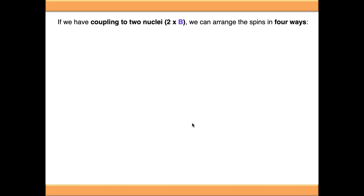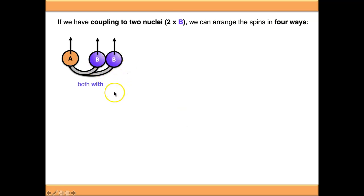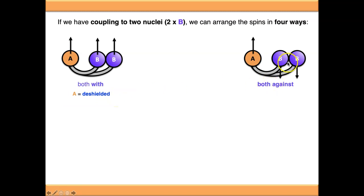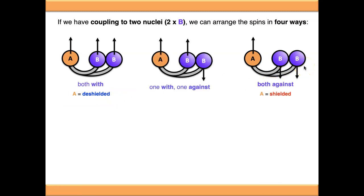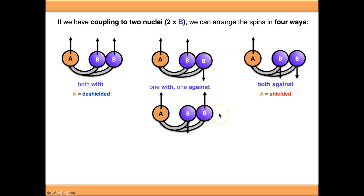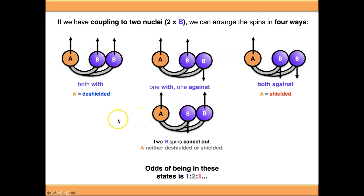For a more complex example coupling to two equivalent nuclei, we can arrange the spins in four ways: both B nuclei aligned with A (deshielded), both against (shielded), or one B aligned and one against — two arrangements of this. In the mixed cases, the two B spins cancel out and A experiences no net shielding or deshielding, staying exactly where it was. The odds of being in each state are equal, so it becomes 1:2:1, giving us a triplet.